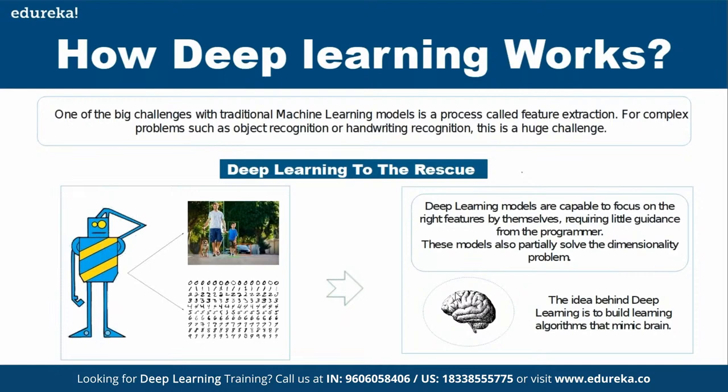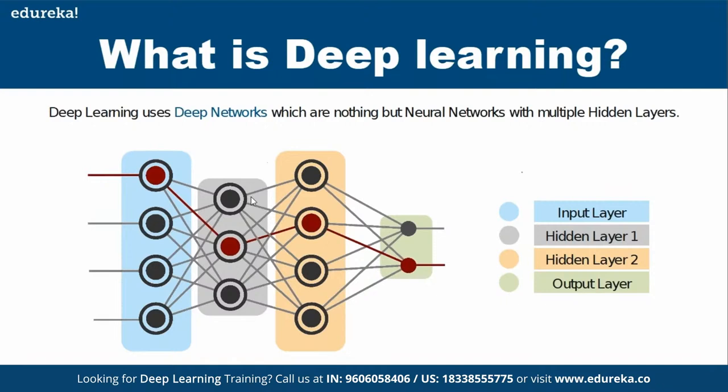The program mimics just like your brain's neural cells — that's why the name neural network — and it helps you identify features in a much better way. Any deep neural network basically has three types of layers: an input layer, an output layer, and hidden layers. Here there are two hidden layers, one input layer, and one output layer.